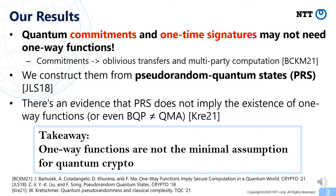The take-home message of this work is the following: one-way functions are not the minimal assumption for quantum cryptography. It is a fascinating future work to identify what is the minimal assumption for quantum crypto.